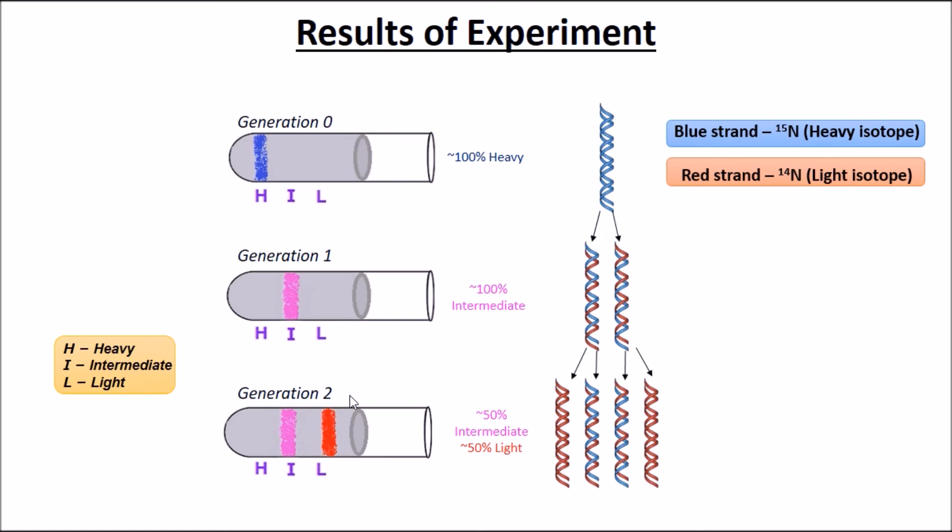Generation 2 contained approximately half of the strands containing only the N14 light isotope strands and half mixed with the N15 and N14 strands.